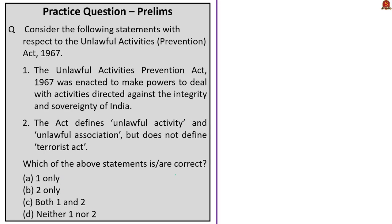The next question is about the Unlawful Activities Prevention Act of 1967. Statement 1 is correct: it is part of the statement of objects and reasons for bringing this act, based on recommendations of a committee on national integration and regionalism. Statement 2 says the act defines unlawful activity and unlawful association but does not define terrorist act — this is incorrect, as the act also defines terrorist act in Section 15. The terms unlawful activity and unlawful association are explained in Sections 2(O) and 2(P). Though the statement is partly correct, it becomes incorrect because terrorist act is also defined. The correct answer is option A, statement 1 only.